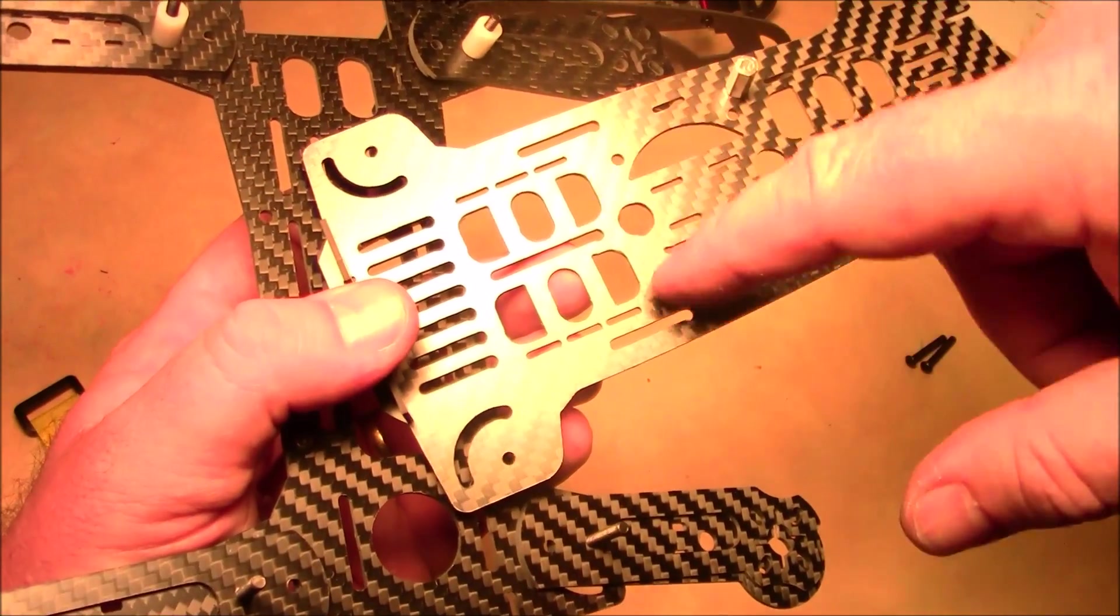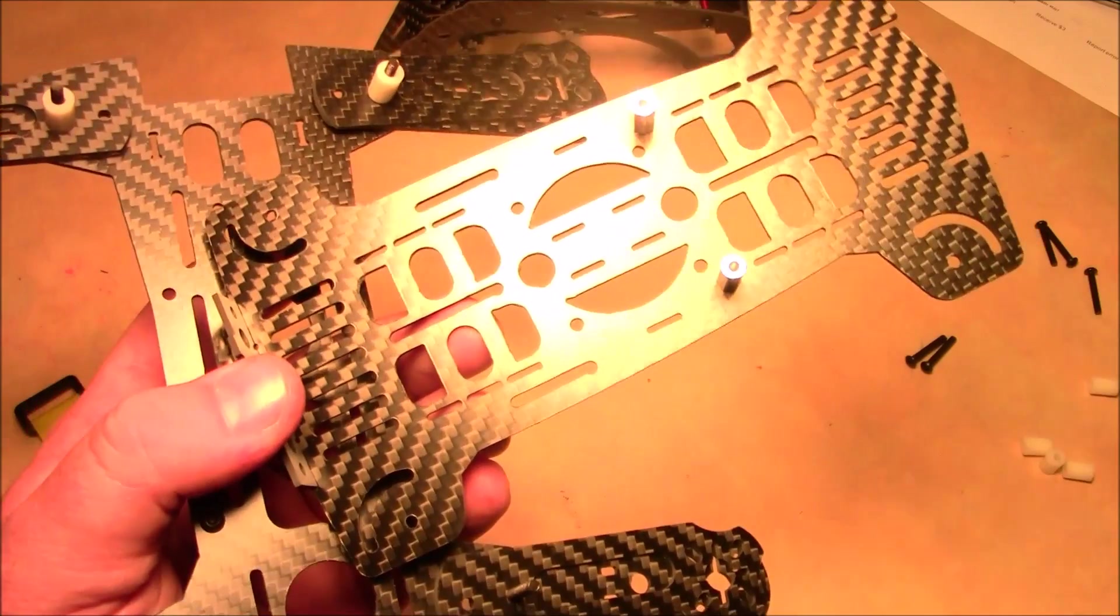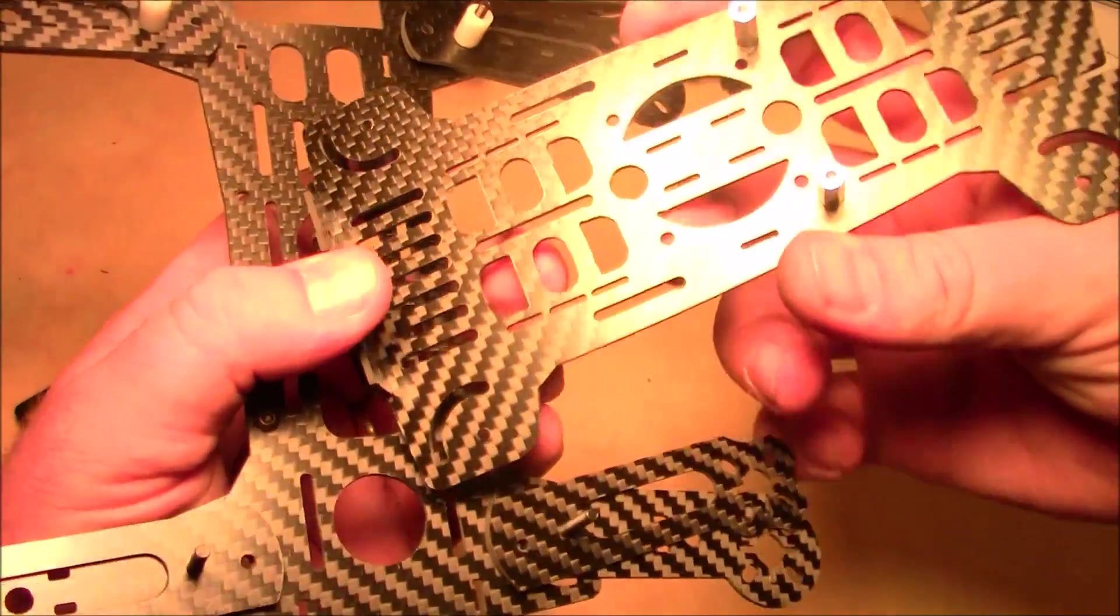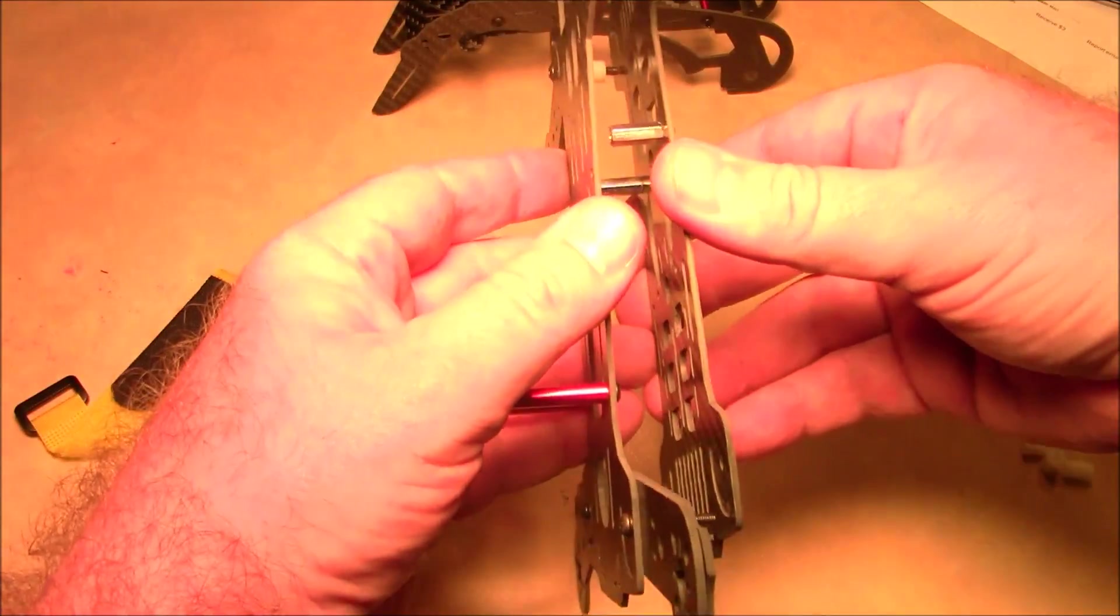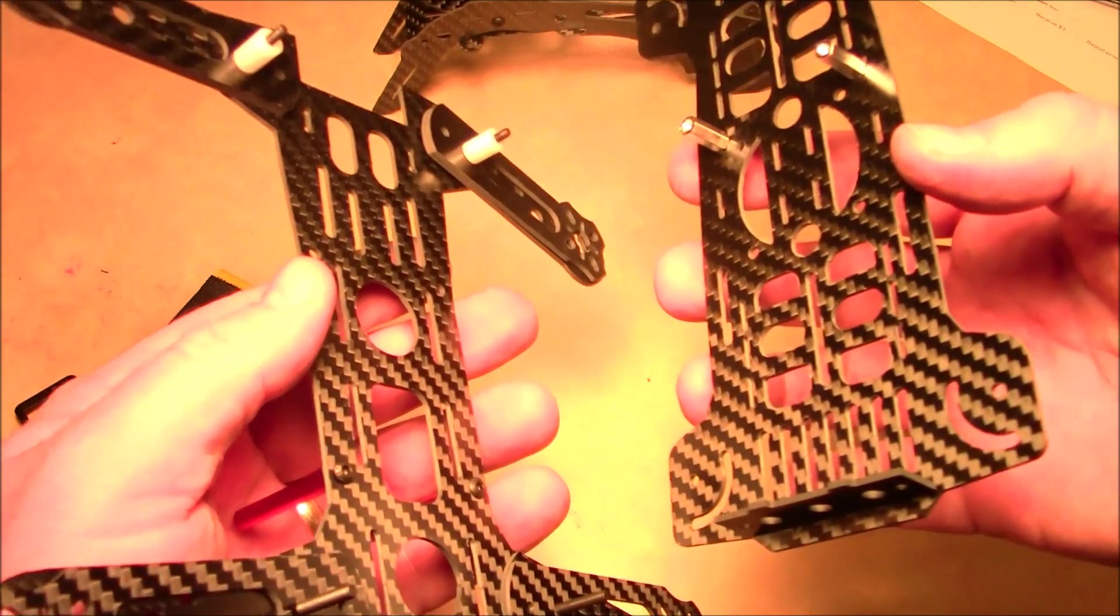It has the four holes inside here which are about the right size for a Naze32 or a CC3D board. So that's actually going to go inside these lower plates down below, and that will give it a lot of protection in flights.